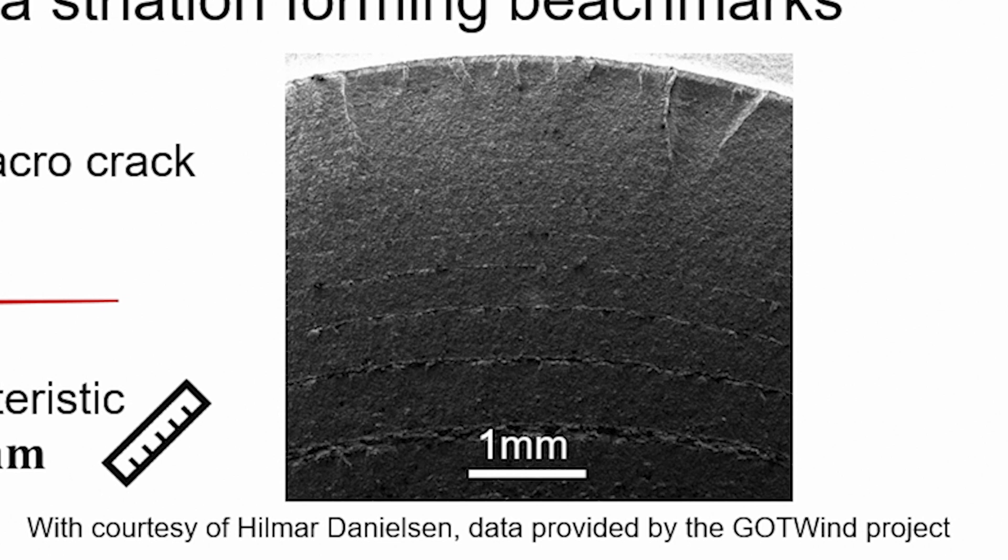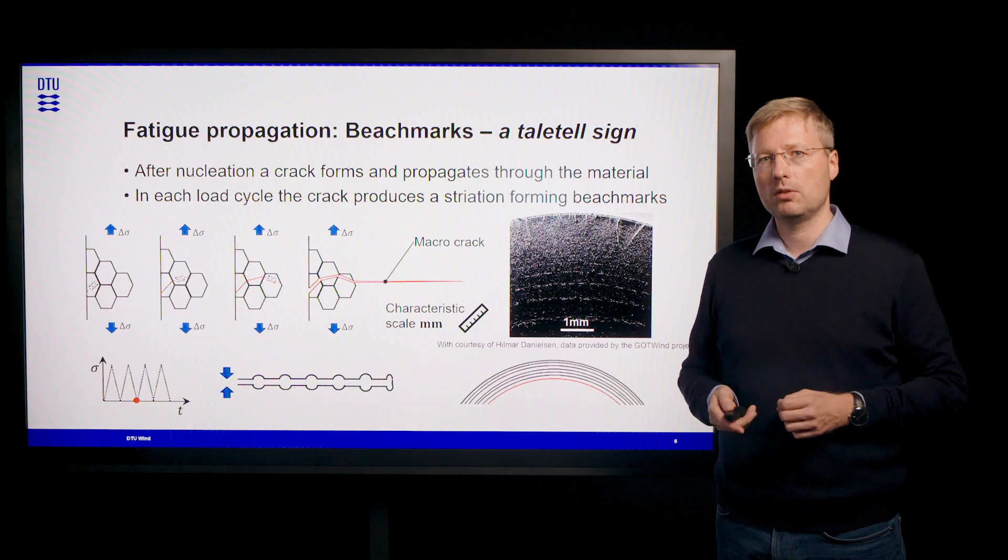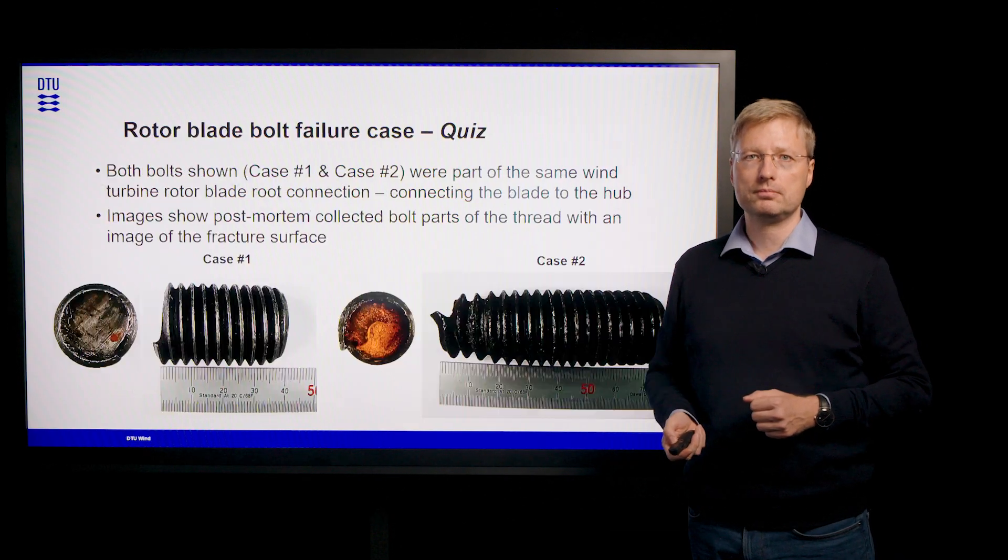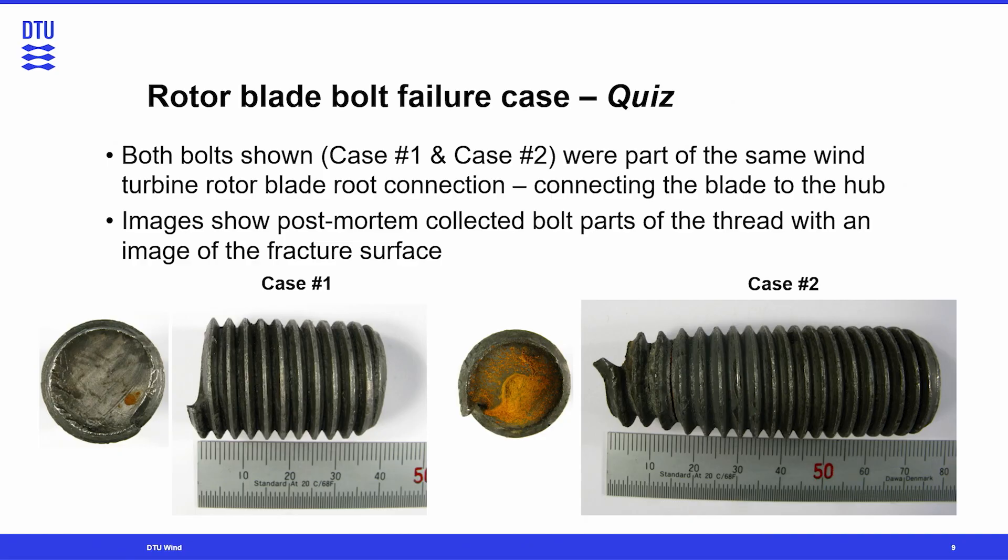So it is very important for engineers, if they look at a failed component, if you see these kind of tell-tale marks, the beach marks on the fracture surface, you will immediately know that this part has failed in fatigue. Now this slide shows two failed bolts as part of the same connection joining a wind turbine rotor blade with a hub. And it will be you to find out what actually was the failure sequence and what happened by answering the questions of the quiz.